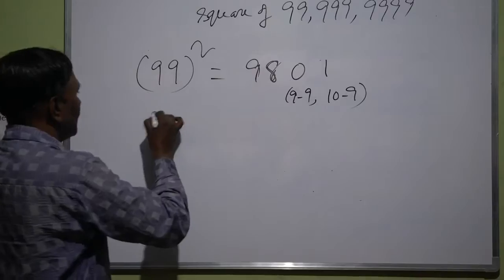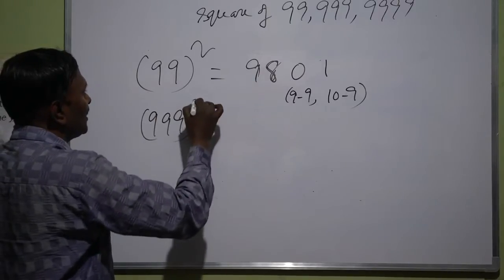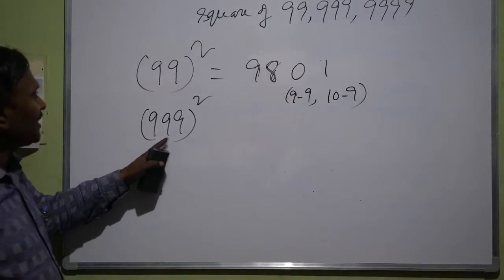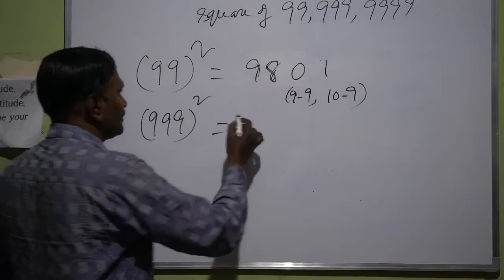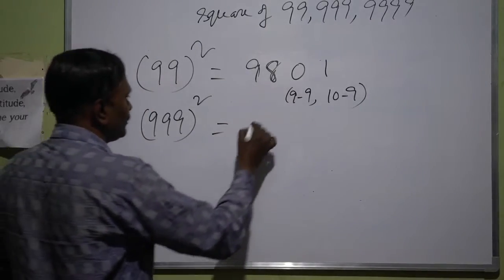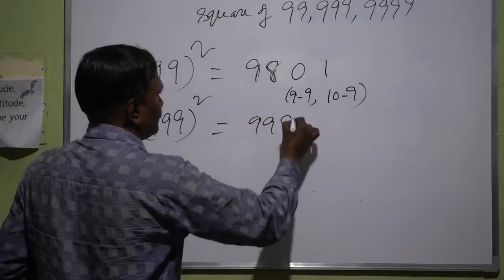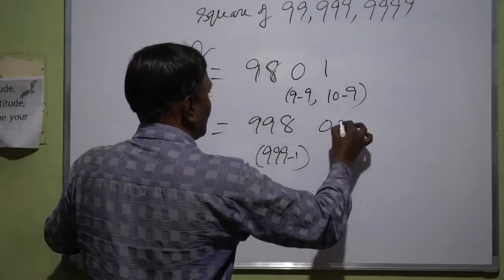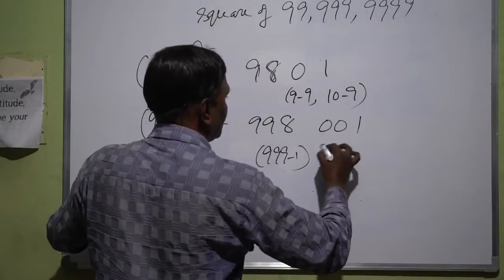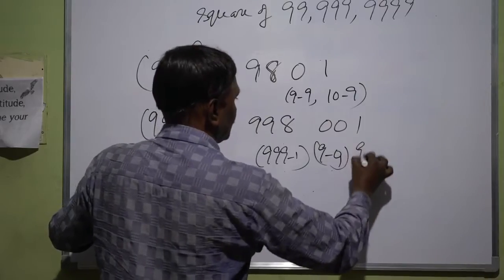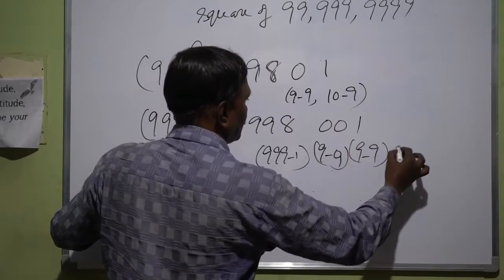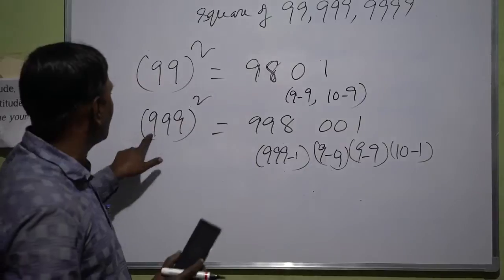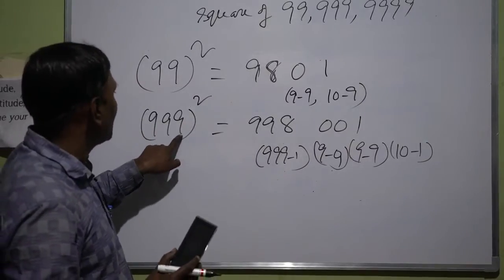And one more thing. Here the number of digits is 3. So in the output the total number of digits is 6 you should remember. See, you subtract 1 and here 1 subtract 998 and 9 minus 9, 9 minus 9, 10 minus 9.